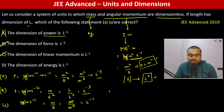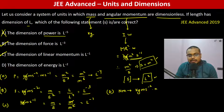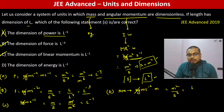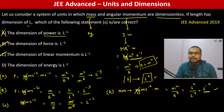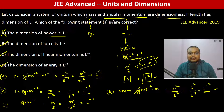And then option D, the dimension of energy: energy is joules, so newton·meter, which is kg·m·s⁻². kg is dimensionless, so we get meter²/second². Second is L², so second² is L⁴. Therefore energy has dimension L⁻². So options B, C, and D are the correct options.